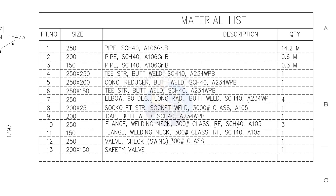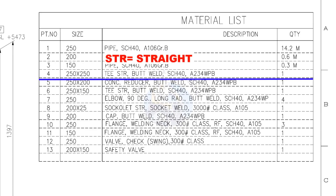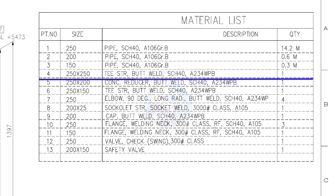Part numbers 1 to 3 — all these pipes are schedule 40. Item number 4: 250 into 250, straight T, butt welded, schedule 40. The quantity is 1.